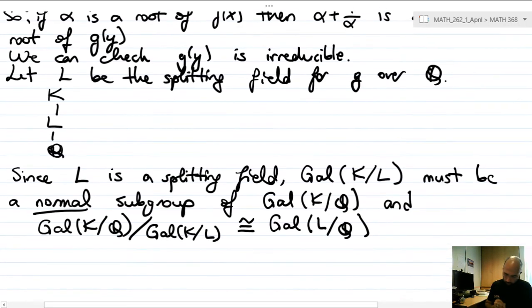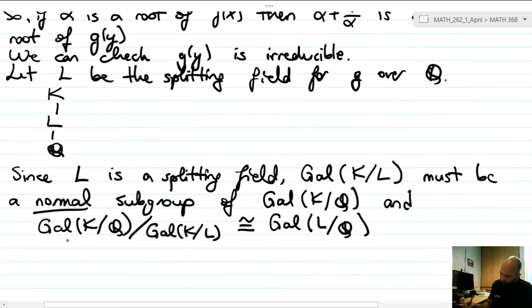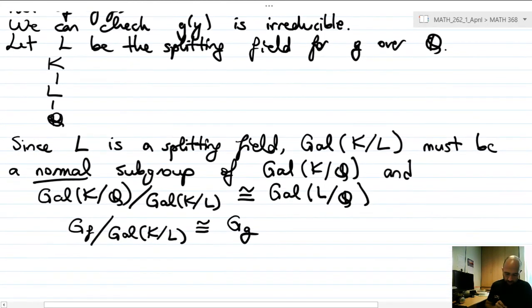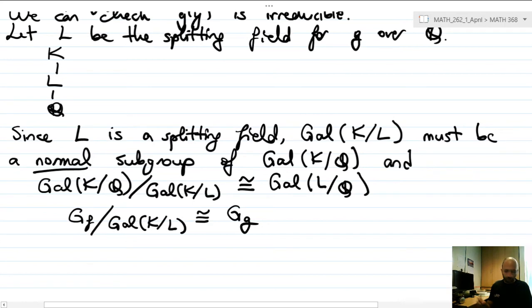Now one of these groups - let me rewrite this in our notation. Gal(K/Q) is our G_f, Gal(K/L) is some group which I don't care about here, and the right hand side is G_g. So the Galois group of the cubic. So this says that the Galois group of the cubic must be some quotient of the Galois group that we're looking for. But we know how to compute G_g, right? Because it's a cubic.